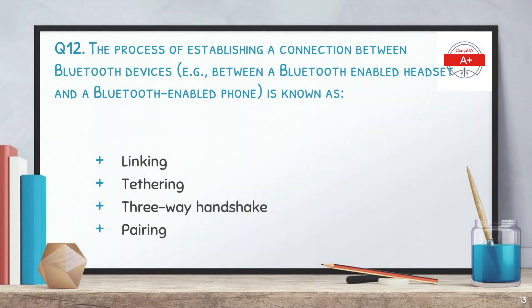The next question: the process of establishing a connection between Bluetooth devices — for example between a Bluetooth-enabled headset and a Bluetooth-enabled phone — is known as? The options are linking, tethering, three-way handshake, and pairing. The answer is pairing.